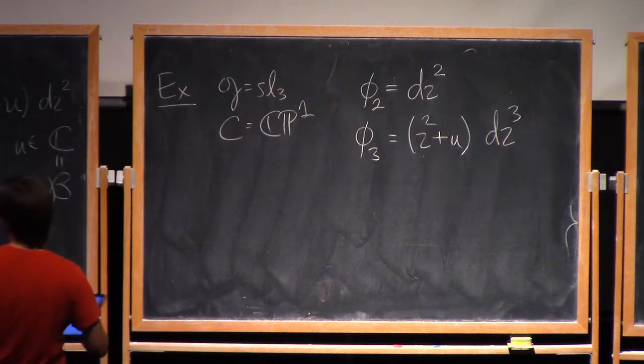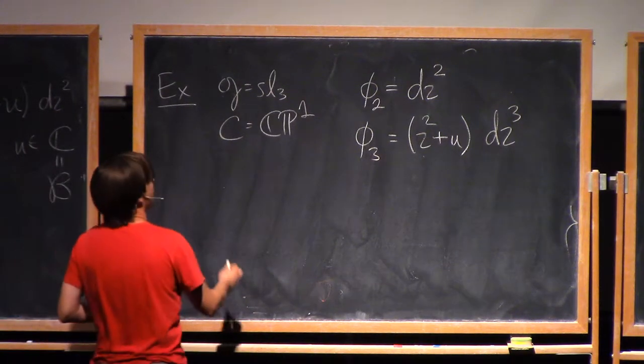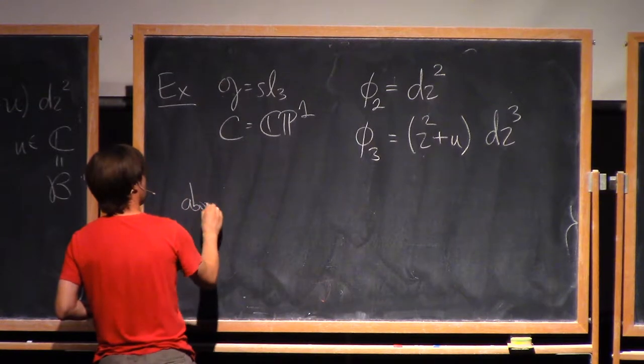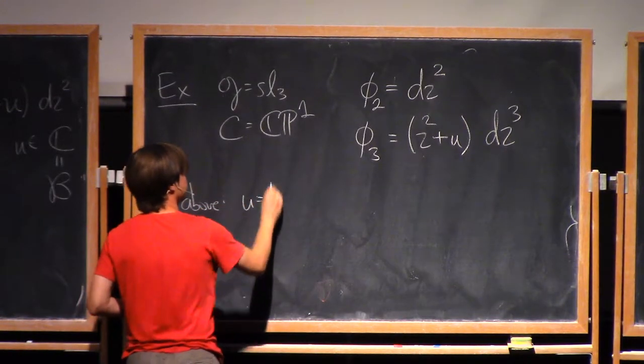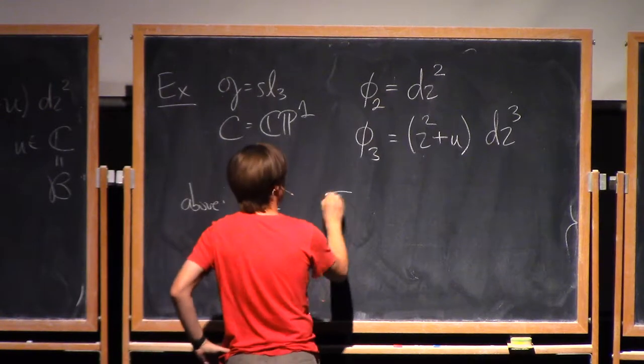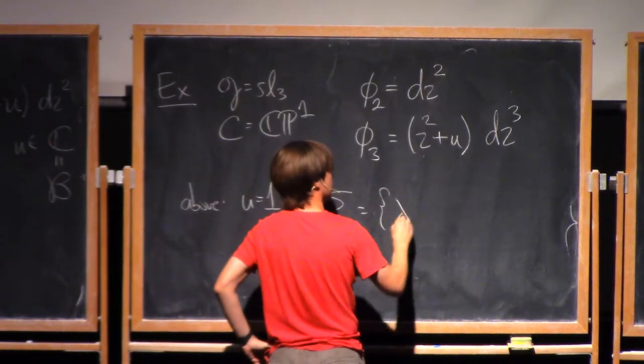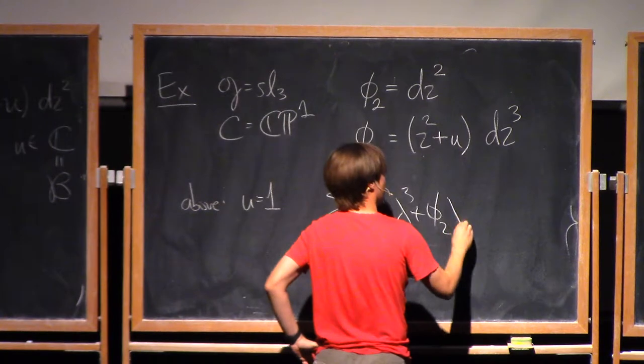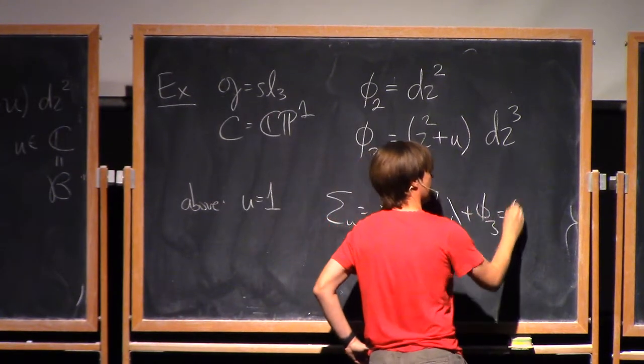The picture I'm showing you at some fixed value of u. So again, I'm showing it to you at u equals 1. In this case, the sigma u is given by the equation lambda cubed plus phi 2 lambda plus phi 3 equals 0.